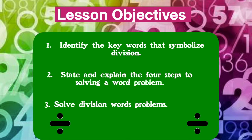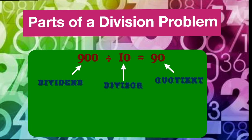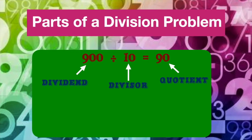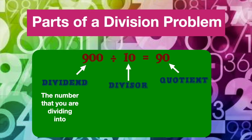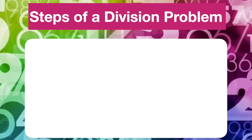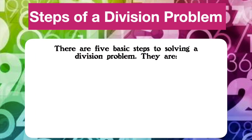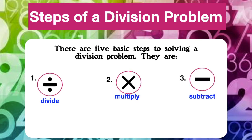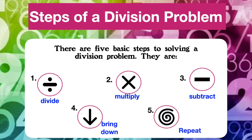Before we begin, let's do a quick review. In our last lesson, we looked at the parts of a division problem. Now let's review the steps of solving a division problem. There are five basic steps. Do you remember what they are? I'll give you a minute to think. If you said divide, multiply, subtract, bring down, and repeat — you are correct.